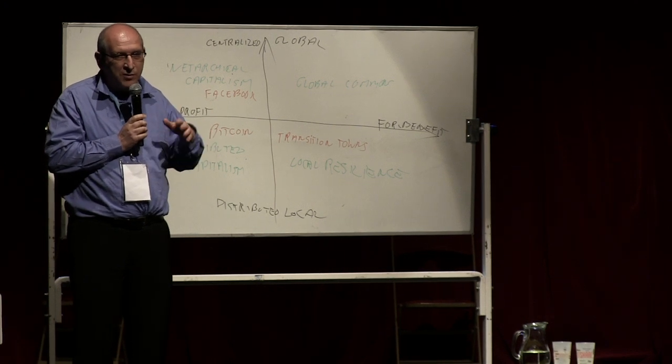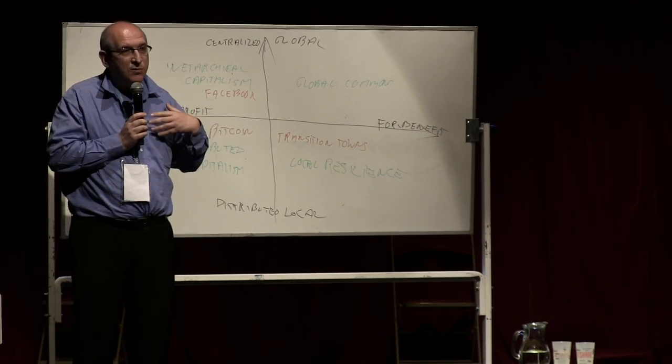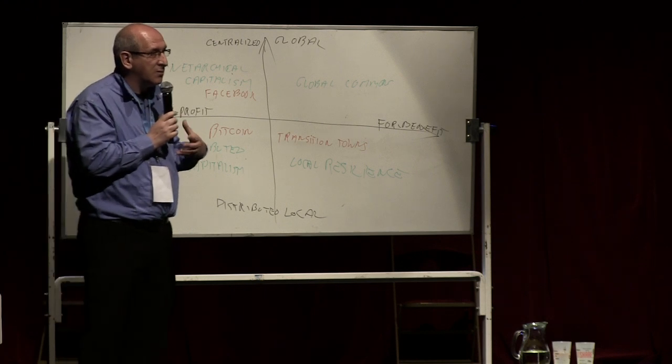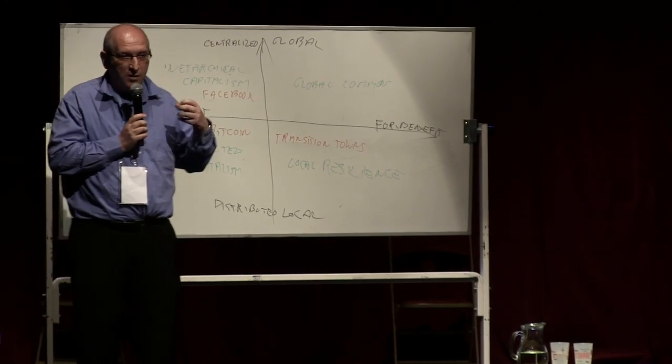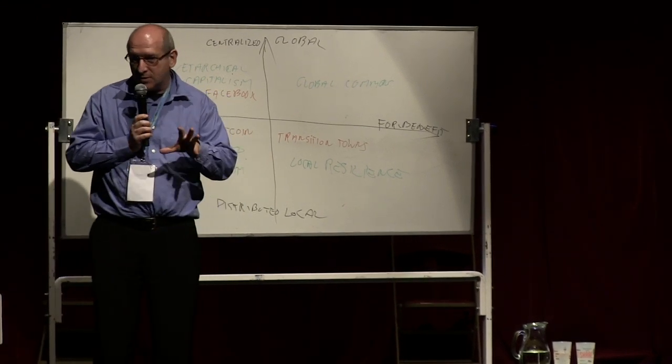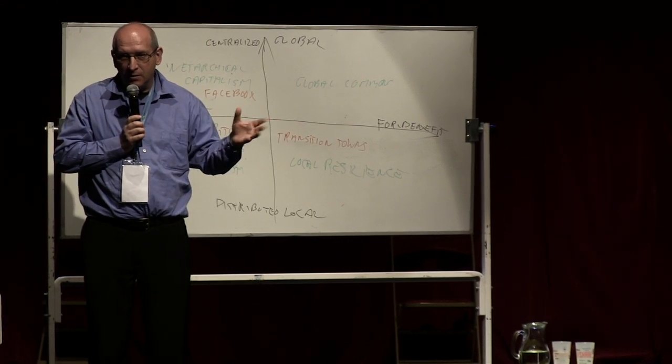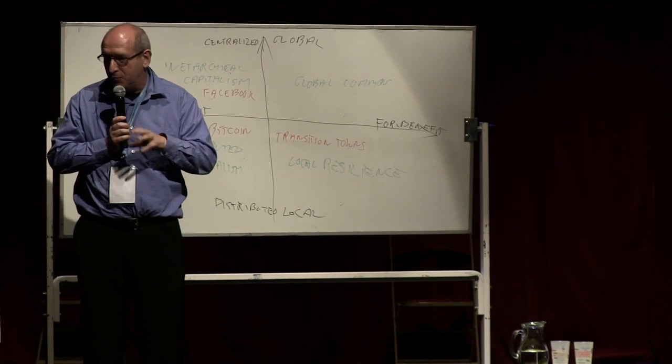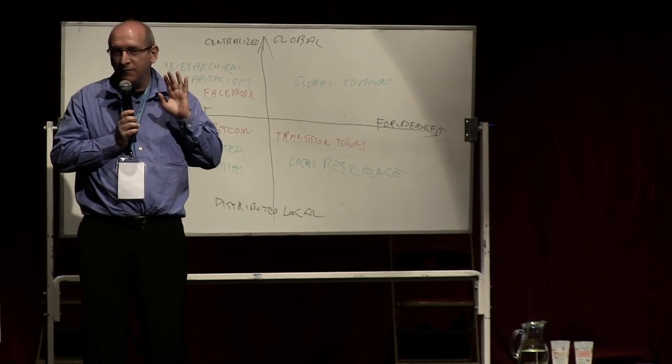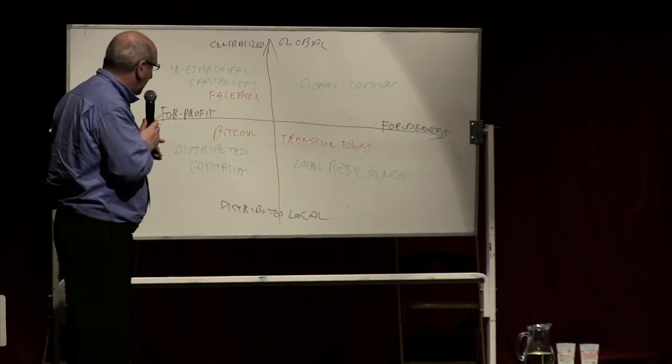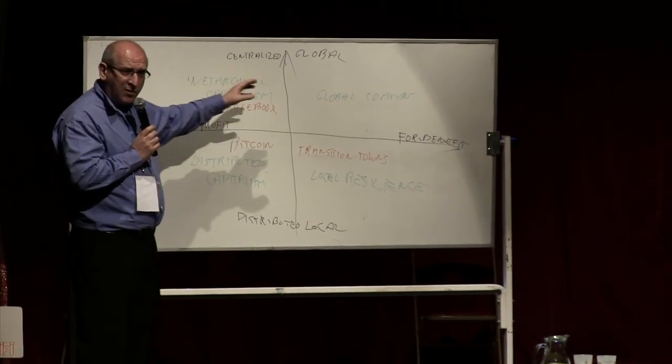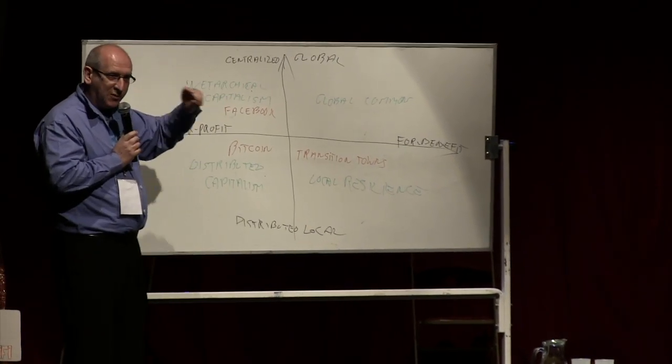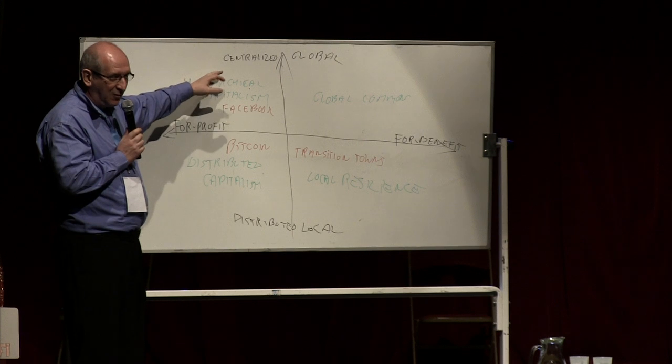But that doesn't mean that there is only one future. Because human beings are intentional beings, we create social systems, we put DNA in those social systems, and these have effects. So we have to think about what kind of DNA do we want to put in our peer-to-peer systems, because it can have very different effects. And this may sound contradictory, but just hold that in your mind, it's possible.